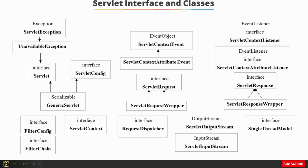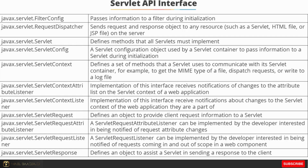This is the ecosystem of functions, APIs, interfaces, and classes available as part of the servlet API. We have javax.servlet.FilterConfig, which passes information to a filter during initialization. javax.servlet.RequestDispatcher sends request and response objects to any source such as a servlet, HTML file, or JSP file on the server. javax.servlet.Servlet defines methods that all servlets must implement. ServletConfig is a configuration object used by the servlet container to pass information to a servlet during initialization. ServletContext defines methods a servlet uses to communicate with its servlet container — for example, to get the MIME type of a file, dispatch requests, or write to a log file.